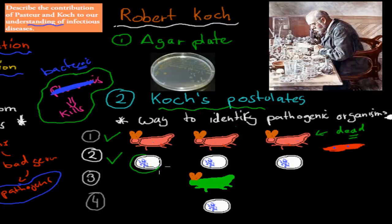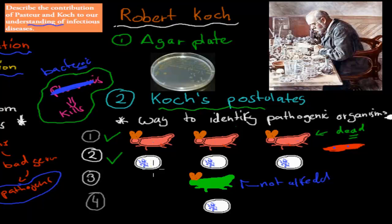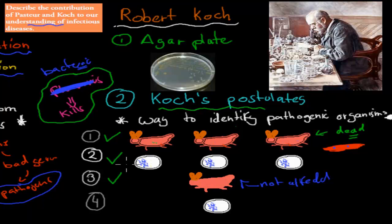Step three: we take the same bacteria that we just grew on the agar plate and inject it into an unaffected organism - green means not affected. We want to show that if we put this bacteria into the healthy animal, it will also die because it has that same bacteria which kills it. So we inject it into our test animal, and if it's causing disease, that animal should also die. If it does die, that gives us further evidence that this bacteria is indeed causing the disease.